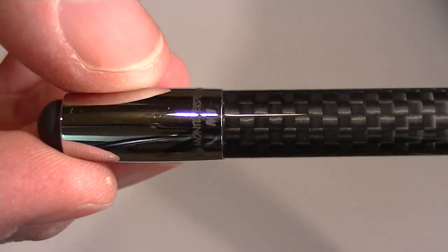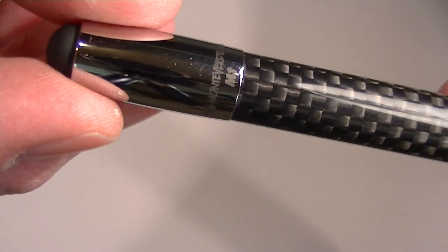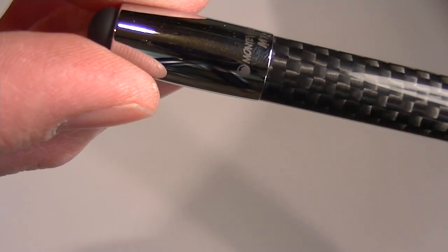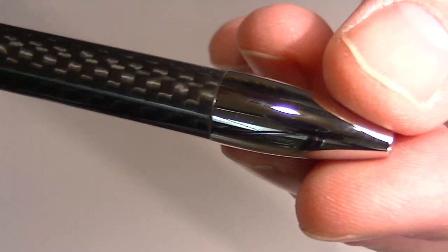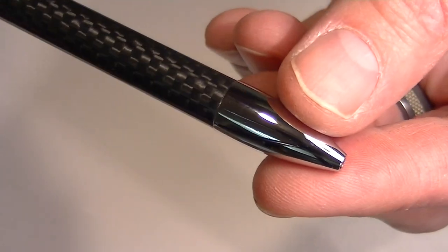On the top of the pen, engraved into that chrome section, is Monte Verde USA M1, and it has a chrome tip to the pen.